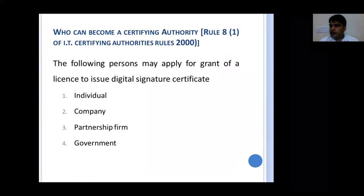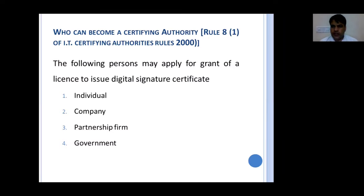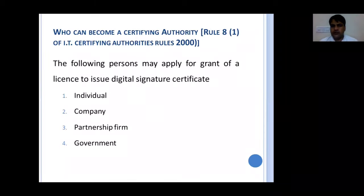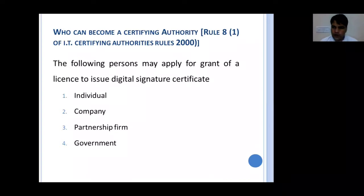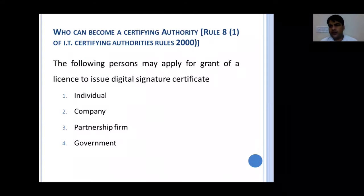Now we come to who can become a certifying authority. The applicable rules are Rule 8(1) of IT Certifying Authorities Rules 2000. As per Rule 8(1), there are four categories of persons which can be granted the license to issue a digital signature certificate: first is any individual, second is any company, third is any partnership firm, and fourth is the government itself.